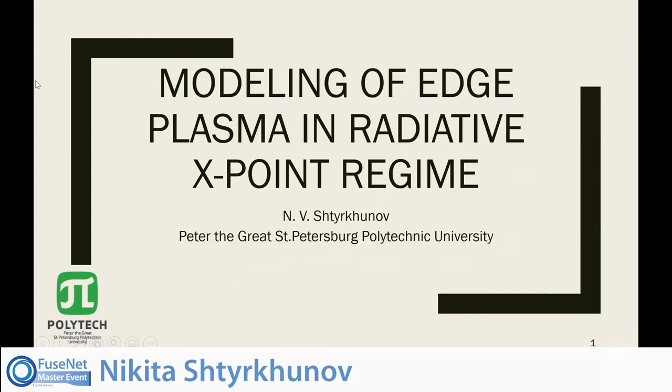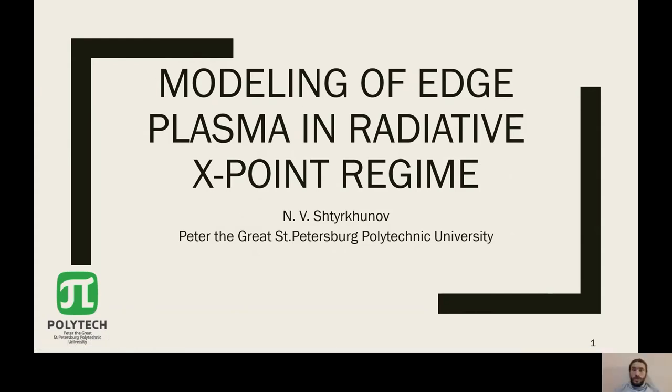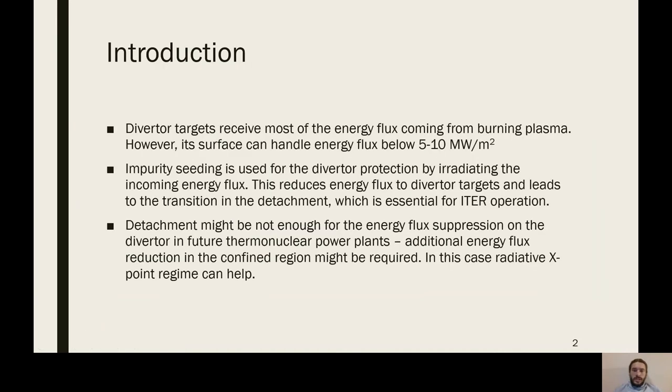Hello, my name is Nikita, and I want to talk about modeling of edge plasma in radiative fixed-point view. Divertor targets receive most of energy flux coming from the burning plasma. However, its surface can handle energy flux below 5 or 10 megawatts per square meter. We can use impurity seeding to radiate most of the energy and decrease energy flux.